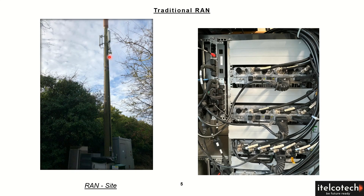Here it is a wooden pole where there are different antennas connected on the top of it. These antennas are basically communicating with the users in their vicinity and take that information back through the black cables, which are feeder cables, to the cabinet which is lying on the bottom.